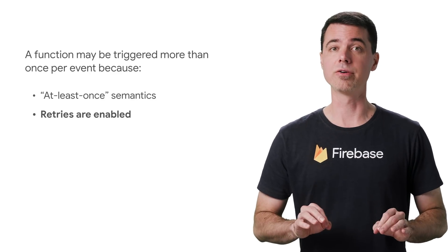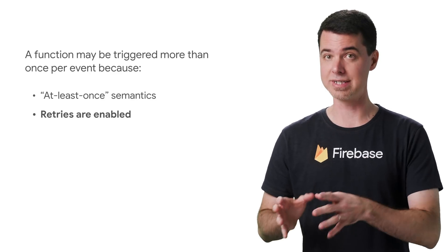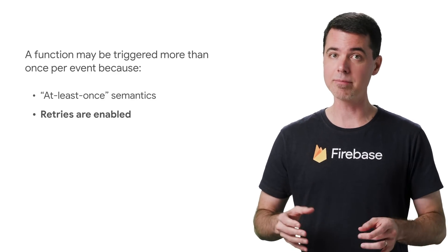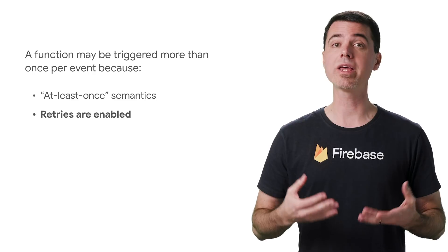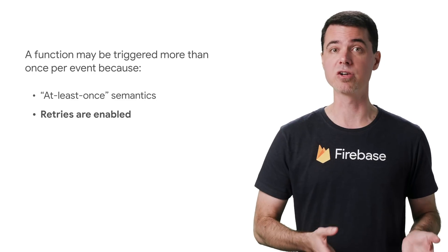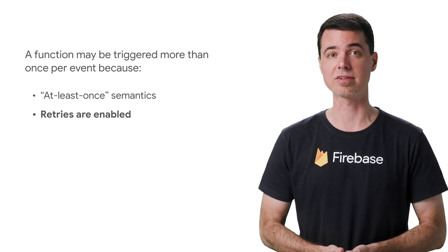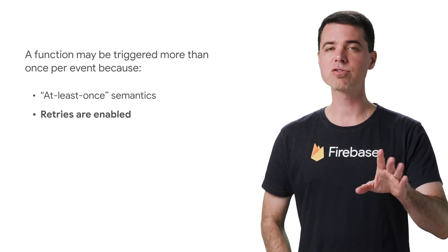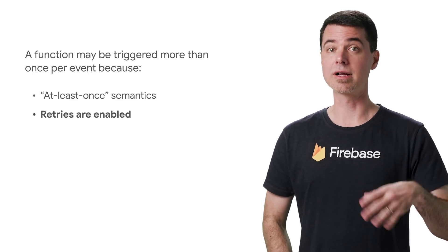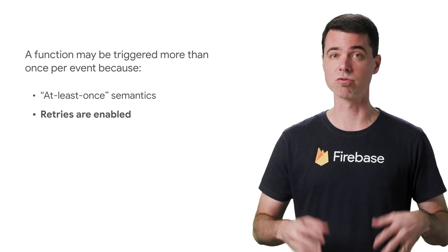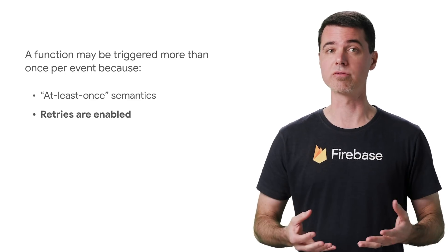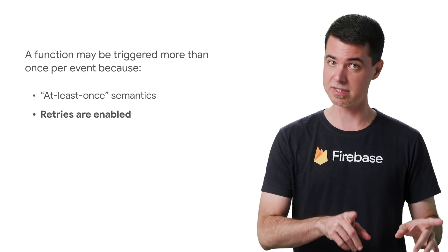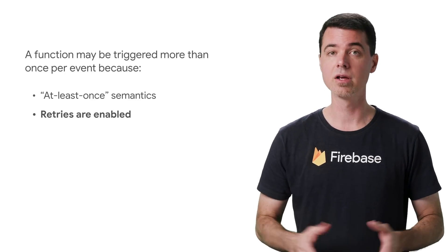By default, retries are disabled. And that means the event will get dropped if your function doesn't complete successfully. However, if retries are enabled, Cloud Functions will arrange to re-deliver the event if it detects an error.